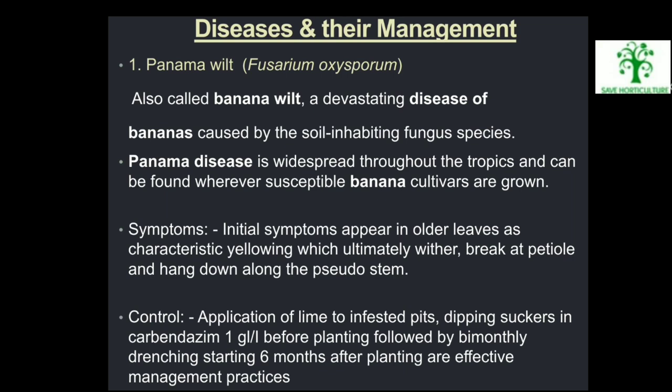Disease Management — Panama Wilt (Fusarium oxysporum), also called banana wilt, is a devastating disease caused by a soil-inhabiting fungus. Panama disease is widespread throughout the tropics wherever susceptible banana cultivars are grown. Symptoms: Initially, symptoms appear in older leaves as characteristic yellowing, which ultimately wither, break at the petiole and hang down along the pseudostem. Control: Application of lime to infested pits, dipping suckers in carbendazim 1g per litre before planting, followed by biomethyl drenching starting 6 months after planting are effective management practices.